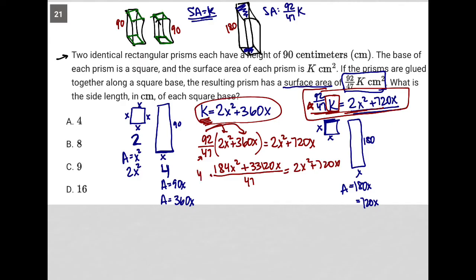I can then multiply both sides by 47. Leaving me with 184x squared plus 33,120x is equal to 94x squared. And then let's see, 47 times 720. So plus 33,840x.